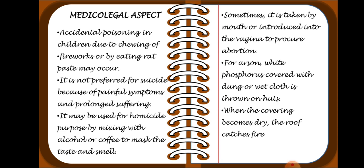Phosphorus may be used for homicide by mixing it with alcohol or coffee to mask the taste and smell. Sometimes it is taken by mouth or introduced into the vagina to produce abortion. For arson, white phosphorus covered with dung or wet cloth is thrown onto a structure; when the covering dries, the roof catches fire.